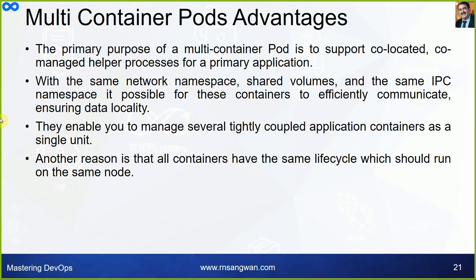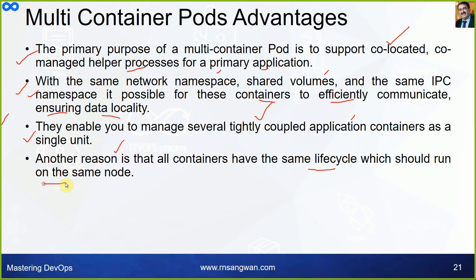The primary purpose of a multi-container pod is to support co-located, co-managed helper processes for the primary application. With the same network namespace, shared volumes, and same IPC namespace, containers can efficiently communicate and ensure data locality. They enable you to manage several tightly coupled application containers as a single unit. All containers have the same lifecycle and run on the same node.